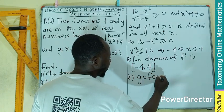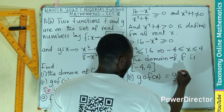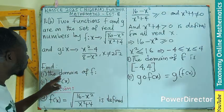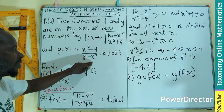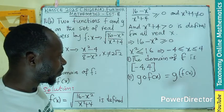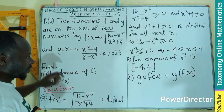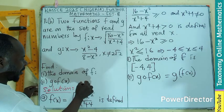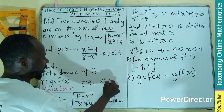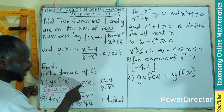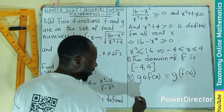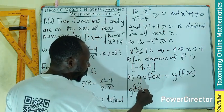The composite g of f(x) means wherever we see x in g(x), all the x values are replaced by f(x). We can write g(x) as x squared minus 4, divided by 8 minus x squared. Since g contains x, and now we feed f(x) as the input, g of f(x) replaces every x with f(x).